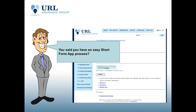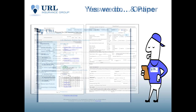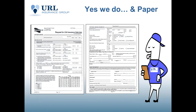The next step is the short form app process. You can do it online or on paper. Online, we have short form app processes through Banner, Genworth, Protective, as well as iGo Drop Ticket with multiple companies. And if you're not an online person, we have paper too — Banner's two-page paper application is very easy and you don't even need a signature.